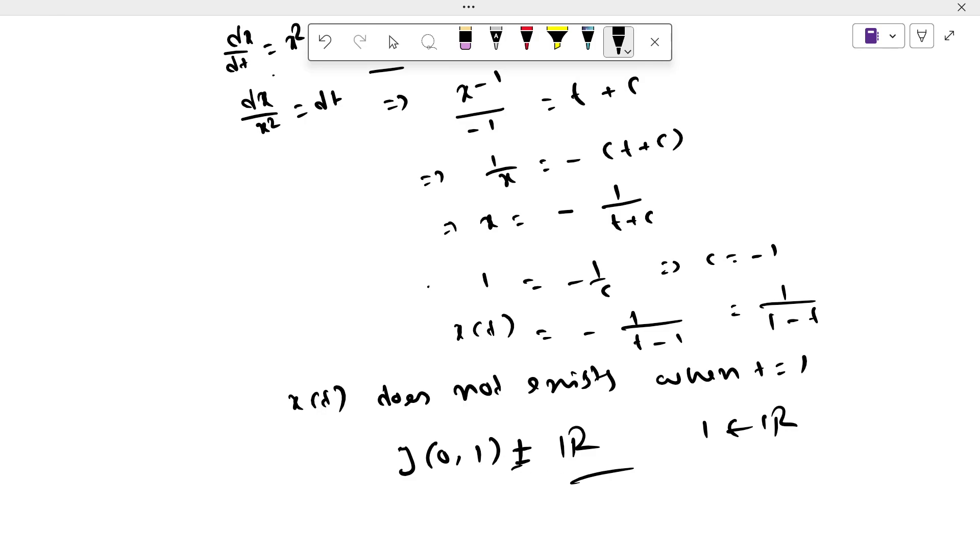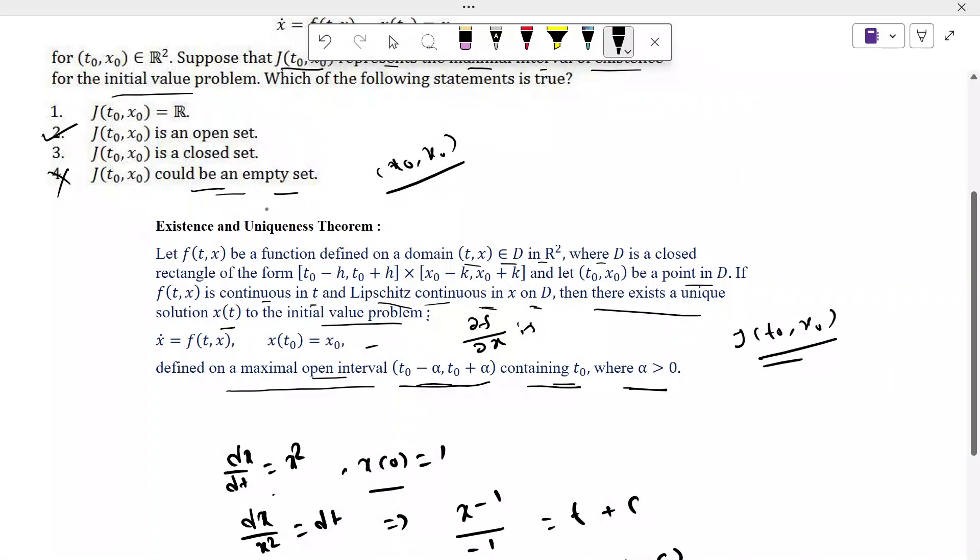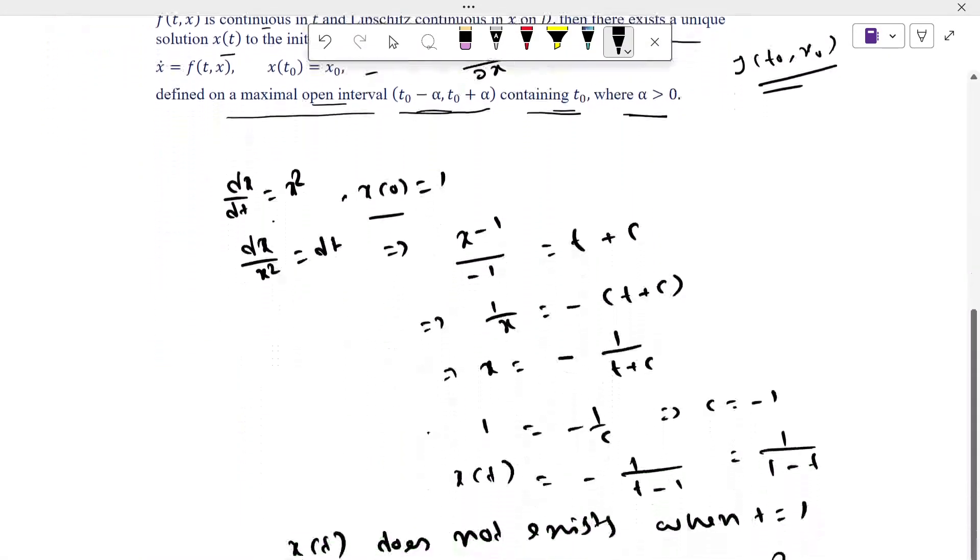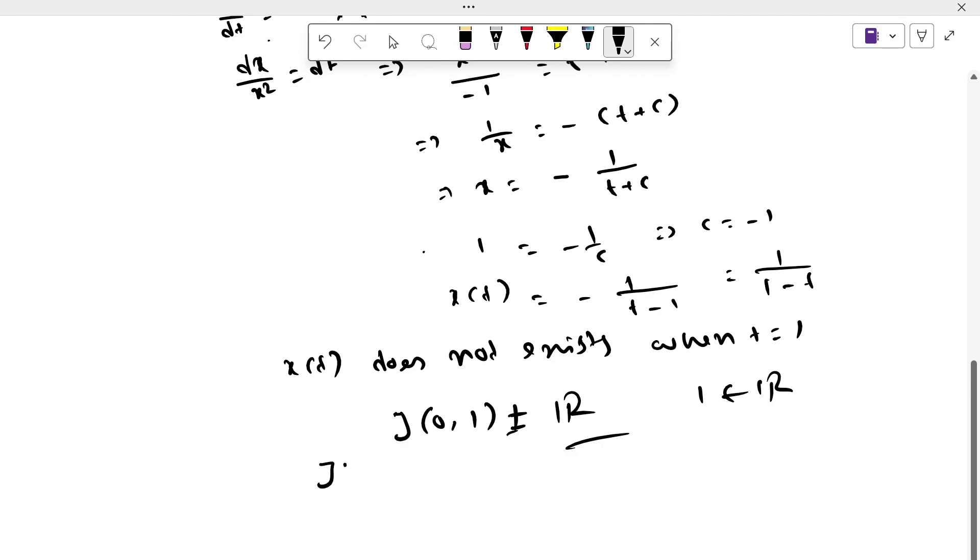J(0,1) not equal to R since 1 belongs to R. So in the first option what is said is J(t0, x0) equal to R. Here we can see that we did not get that. And basically what we get is J(0,1) equal to (-∞, 1) union (1, ∞).